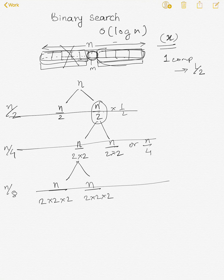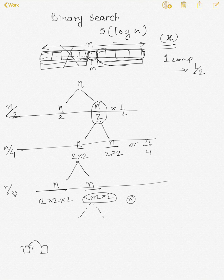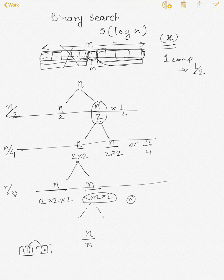We keep on doing that. In the worst case, we assume the element is present at the last index of the array, and we keep dividing until the denominator equals n — meaning there is only one element left in the sub-array. So the last division looks like n/n = 1, or equivalently n/2^k = 1, because we are always dividing by 2, so n over 2 raised to k.